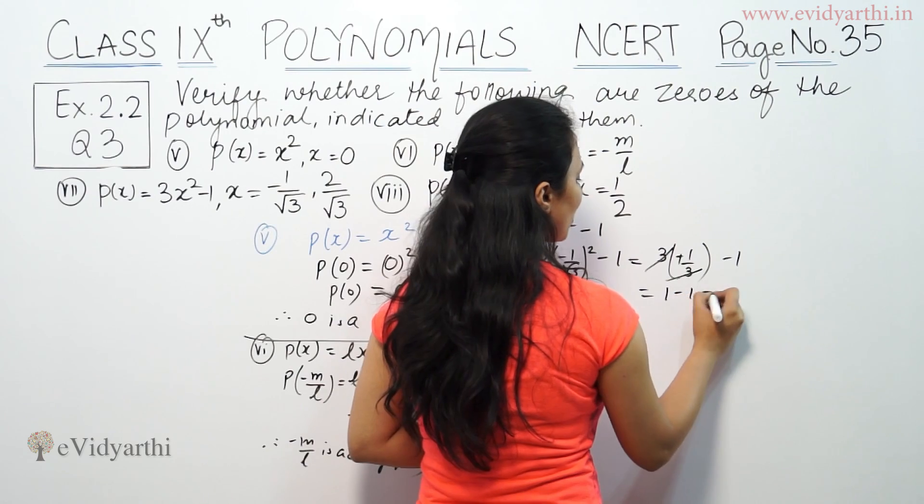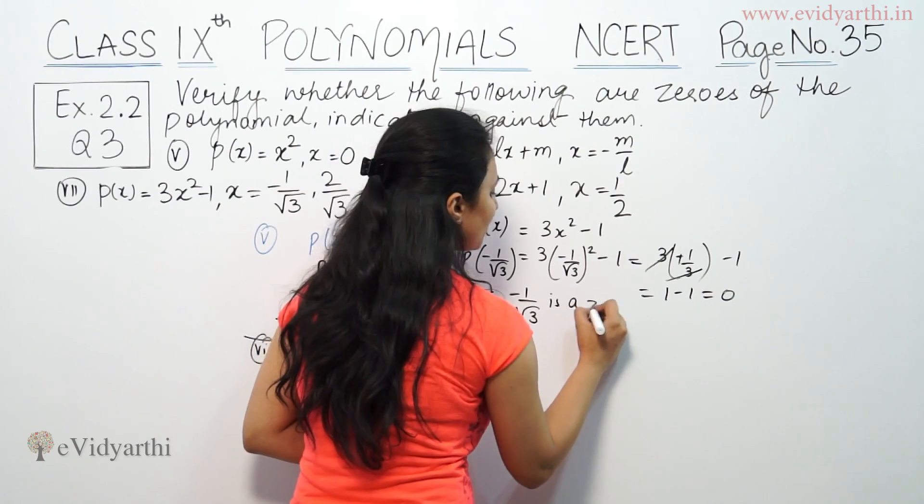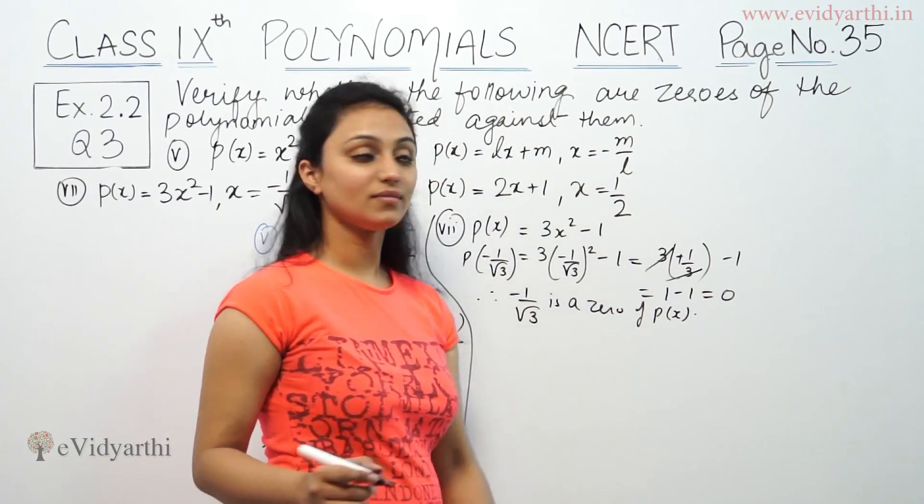So 1 minus 1 is 0. Therefore, -1/√3 is a zero of P(x).